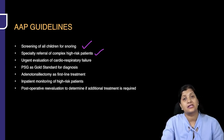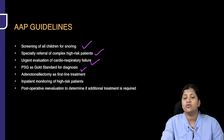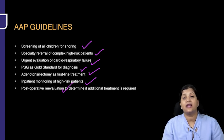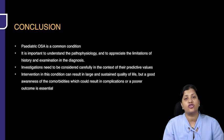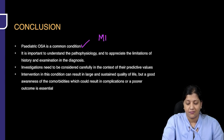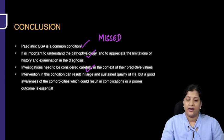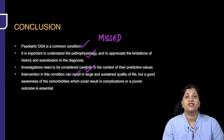According to the American Academy of Pediatrics guidelines: screen all children for snoring, provide specialty referral for complex high-risk patients, and perform urgent evaluation for cardiorespiratory failure. PSG is used as a gold standard; first-line treatment is adenotonsillectomy; inpatient monitoring for high-risk patients; and post-operative re-evaluation to determine if residual OSA requires additional treatment. To conclude, pediatric OSA is a common but often missed condition. Understanding pathophysiology and appreciating the limitations of history and examination is critical, and intervention can have a large impact on the child's quality of life, especially from organ dysfunctions.